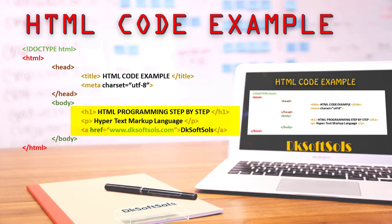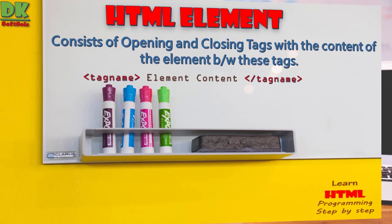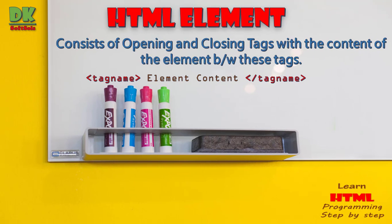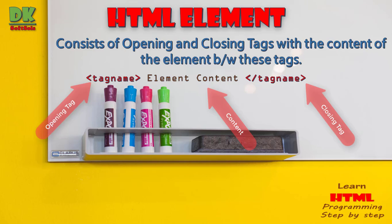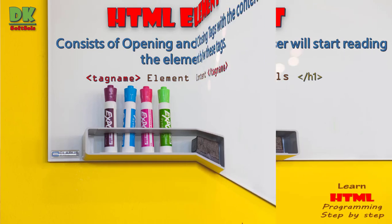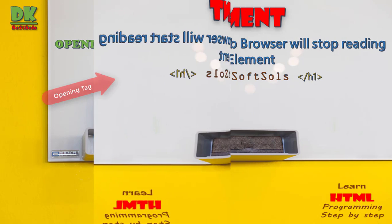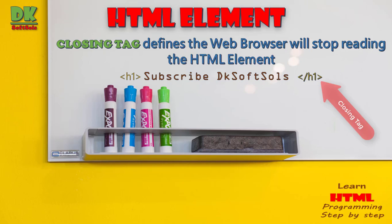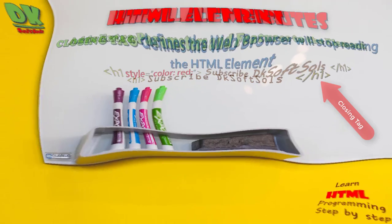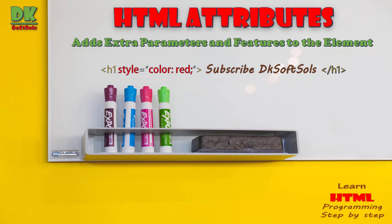An HTML element consists of an opening and closing tag with the content in between. There are also HTML elements with only one tag. The opening tag defines where the web browser will start reading the element, and the ending tag defines where the web browser will stop reading the element.